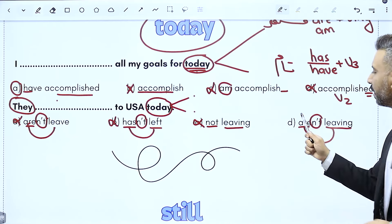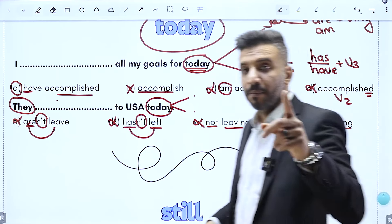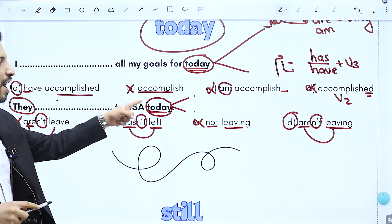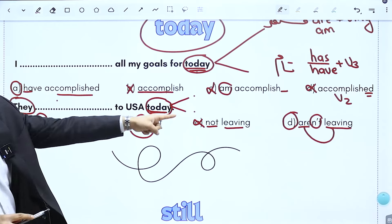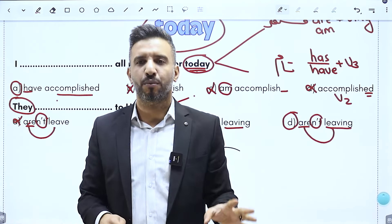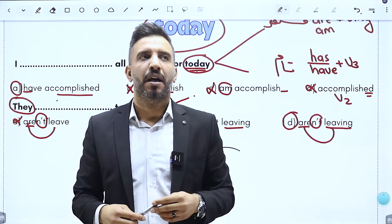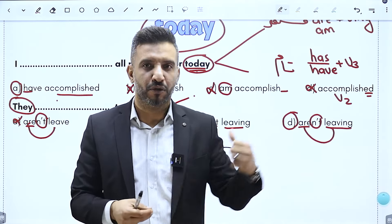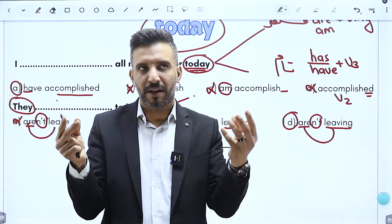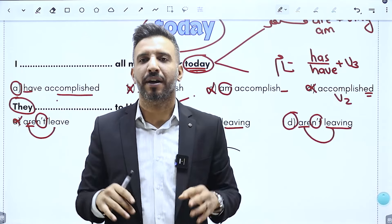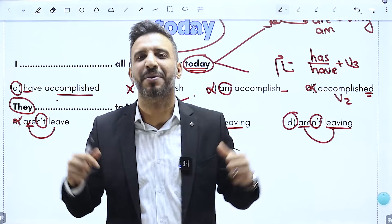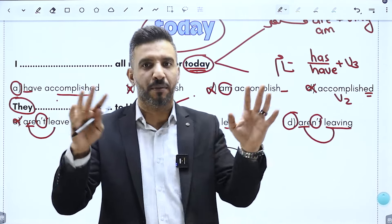الفاعل 'they' ضمير جمع. الجمع لا يأخذ has، يأخذ have. فخيار has not left غلط لأنه الفاعل جمع ما يأخذ has. وصلنا للخيار الوحيد are not waiting، فـ today هنا حطها لتحل على المضارع المستمر. استنتجنا: today أي دليل مشترك بيخوفني؟ لا، أحفظ وين وين وتعامل مع الخيارات.